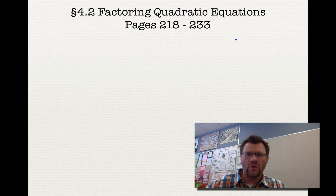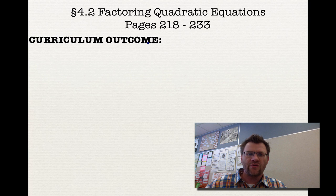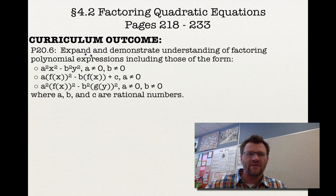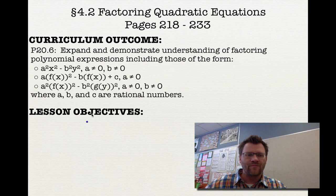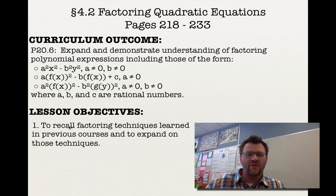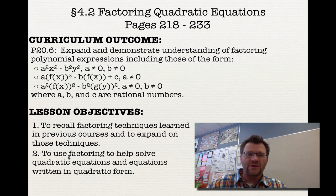Today's topic is 4.2, Factoring Quadratic Equations, on pages 218 to 233 in your text. Our curriculum outcome is 20.6: to expand and demonstrate understanding of factoring polynomial expressions where A, B, and C are rational numbers. Our lesson objectives are two: number one, to recall factoring techniques learned in previous courses like grade 10 and to expand on those techniques; and number two, to use factoring to help solve quadratic equations and equations written in quadratic form.